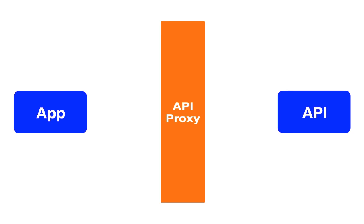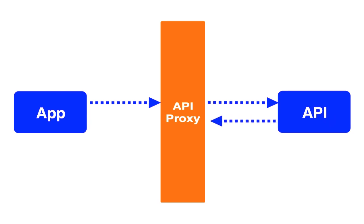The proxy is a facade that you put in front of your API. So instead of calling the API directly, apps call the proxy, and the proxy calls the API. And likewise, for the API's response to the app.